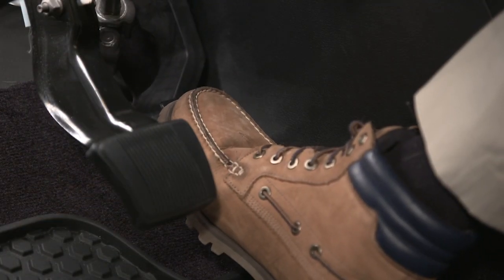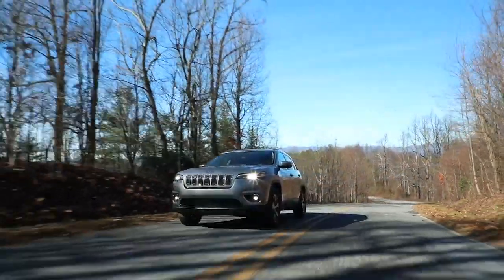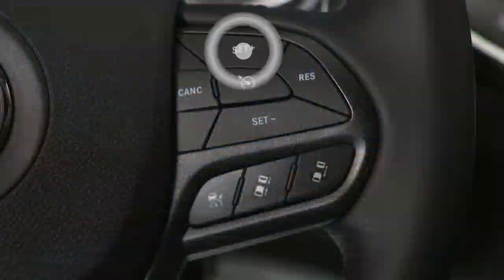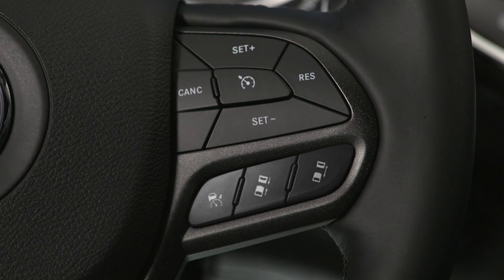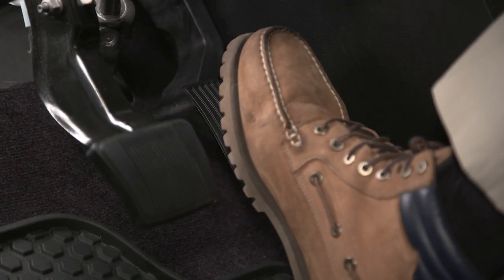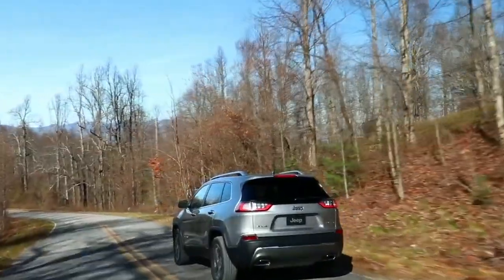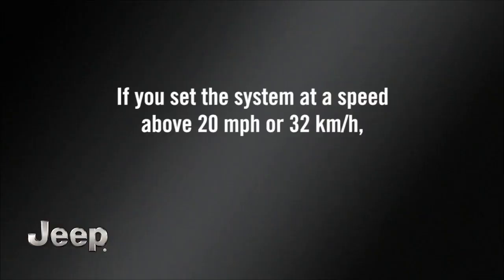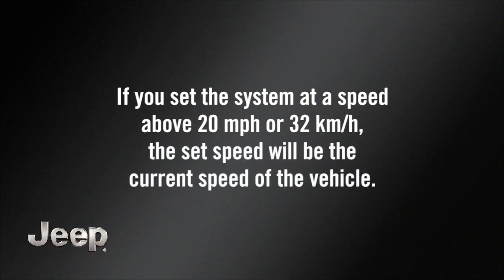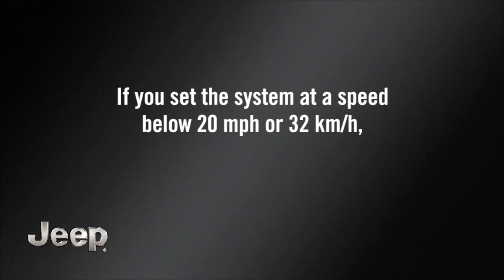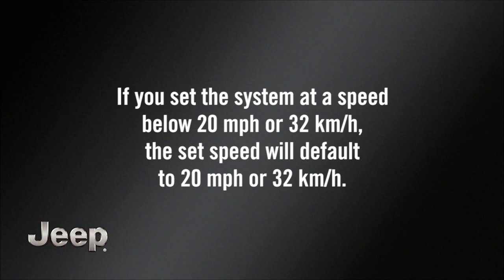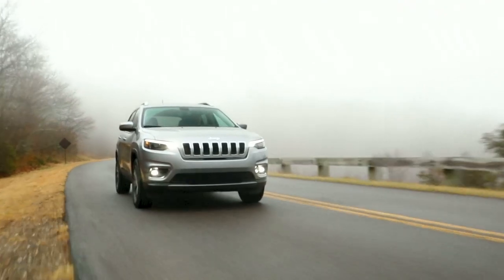First, accelerate to the speed you want to maintain. Then, push and release the Set Plus or Set Minus button to set the speed. Take your foot off the accelerator and the vehicle will cruise at the speed you've selected. If you set the system at a speed above 20 mph or 32 km per hour, the Set Speed will be the current speed of the vehicle. If you set the system at a speed below 20 mph or 32 km per hour, the Set Speed will default to 20 mph or 32 km per hour.